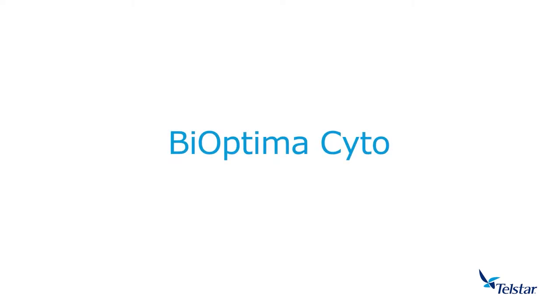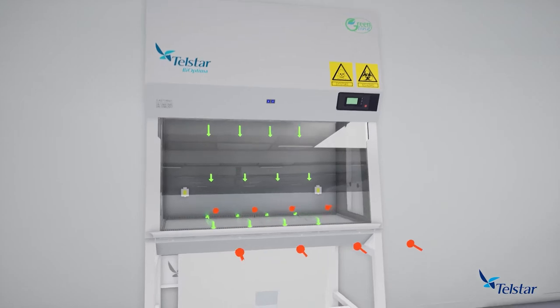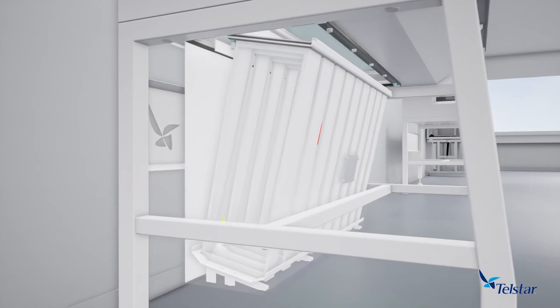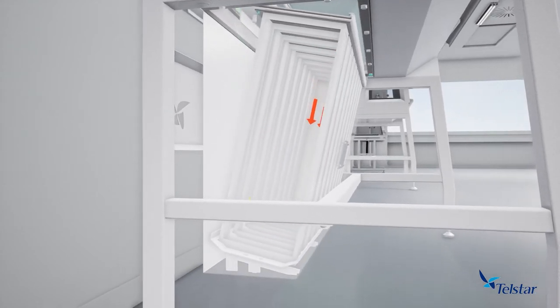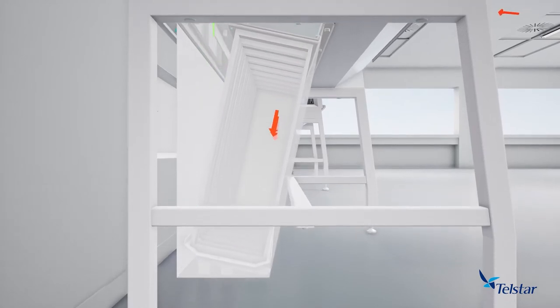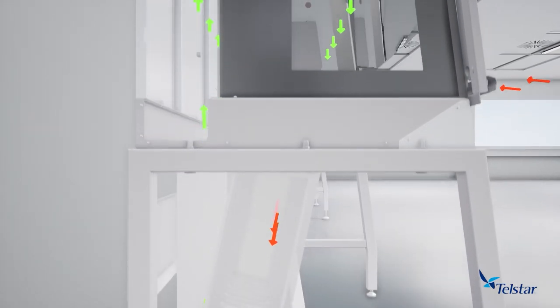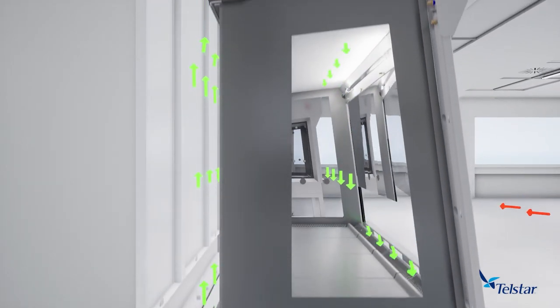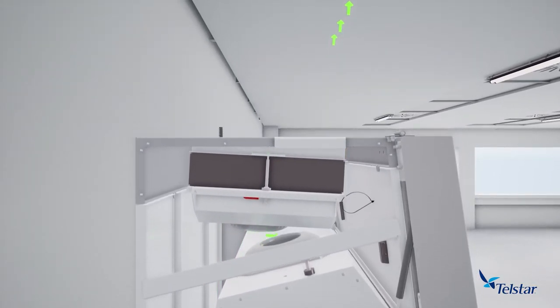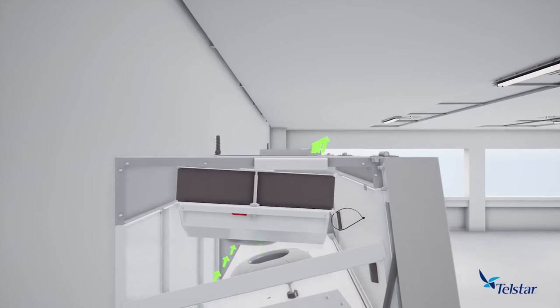Bioptima CITO is equipped with additional V-shaped HEPA filters underneath the work surface, which filter the inflow air and keep the internal construction of the cabinet free of contamination, ensuring the topmost safety for high-risk applications. This cabinet is designed for high-risk microbiological and highly toxic applications, such as the production of cytotoxic medicines.